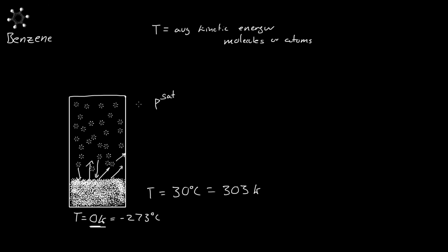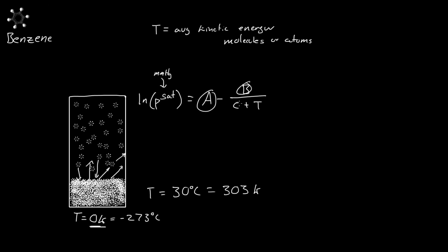The saturated pressure is related to temperature. The log of the saturated pressure equals A minus B divided by (C plus T). Usually the saturated pressure is read in millimeters of mercury. A, B, and C are just constants — this is an empirical formula called Antoine's Equation. You have to look up what A, B, and C are; they're different for every molecule.